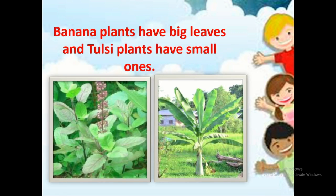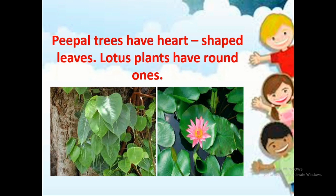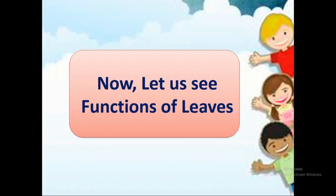Some plants have different sized leaves. Banana plants have very big leaves, and Tulsi plants have small ones. We use banana plant leaves to serve food, and Tulsi plants have a special smell and are used as medicine. Peepal trees have heart-shaped leaves, and lotus plants have round ones.